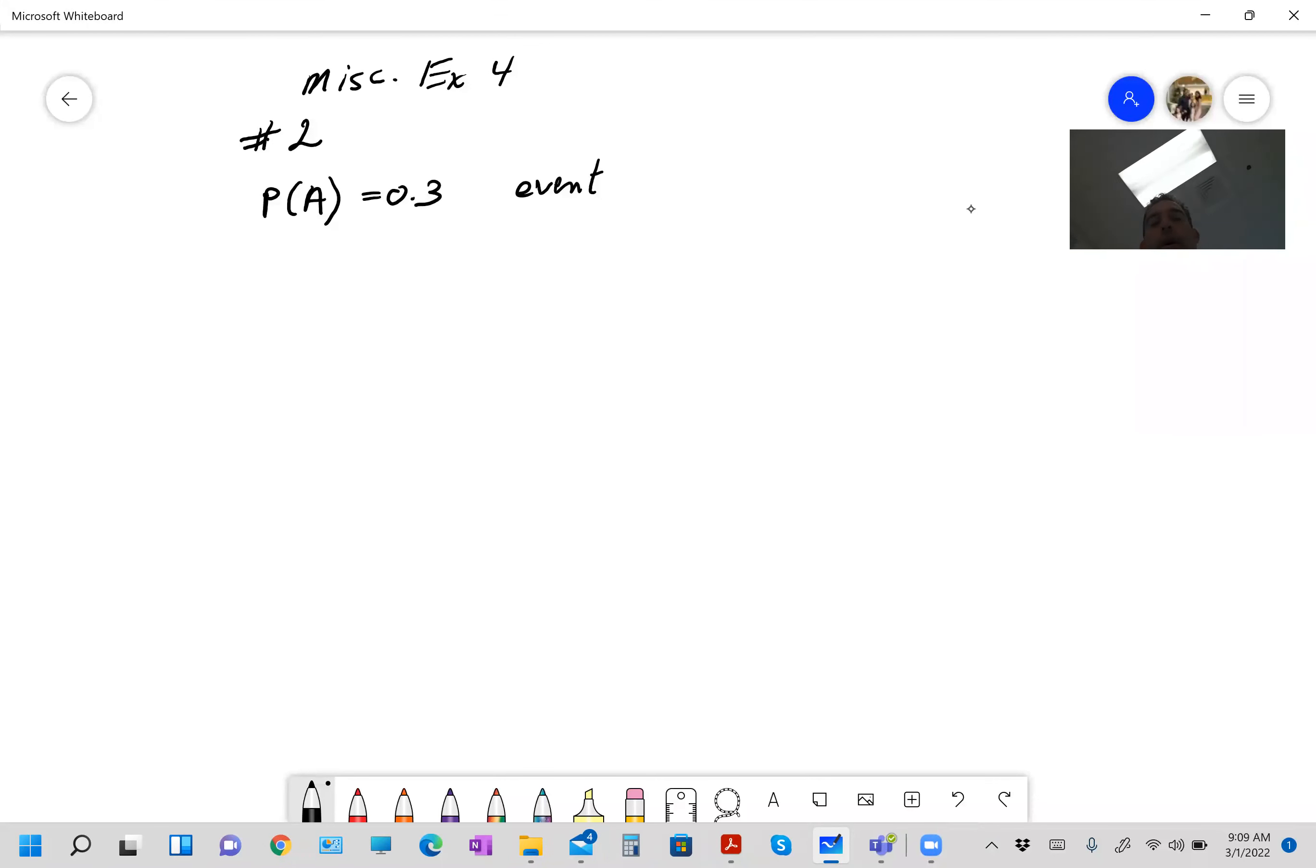Okay, so it says the probability of A is 0.3, the event B is independent of A, so the probability of B equals 0.4. Now, part A says calculate the probability of A or B or both occur. Let me close that because they're kind of annoying.